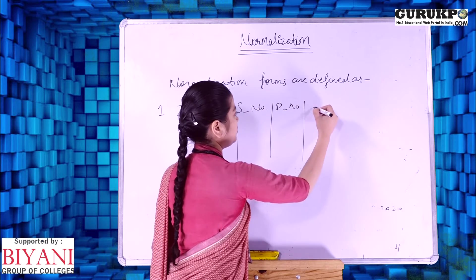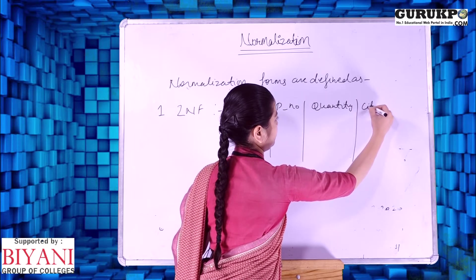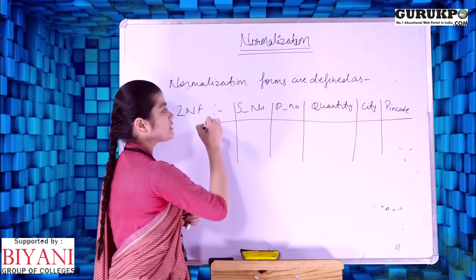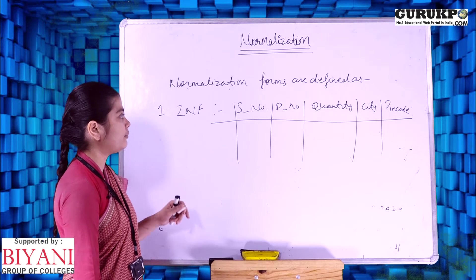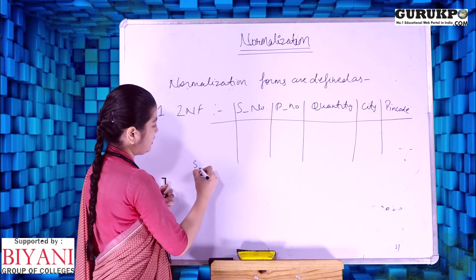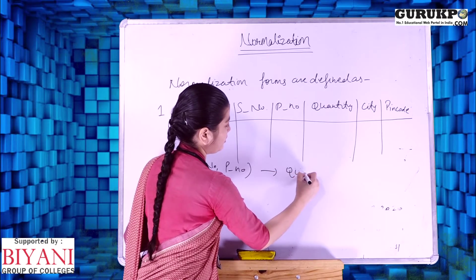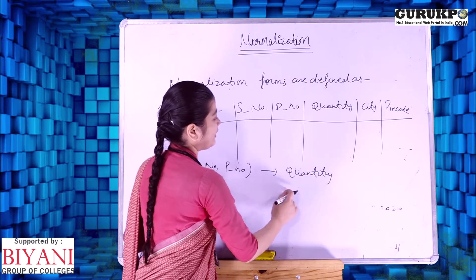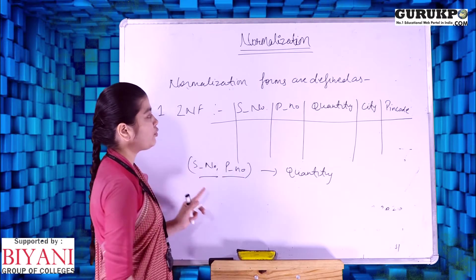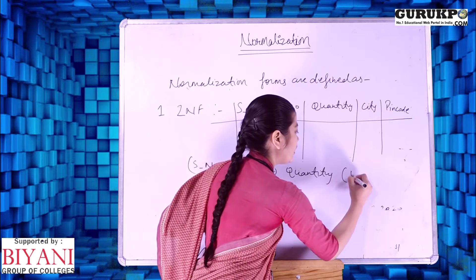Let's take the supplier table example we used earlier, which has five columns. There is a partial functional dependency in this table because serial number and predict number both determine quantity. Quantity is fully functionally dependent on both serial number and predict number together — using only a single attribute we cannot find quantity. So there is a full functional dependency on quantity.